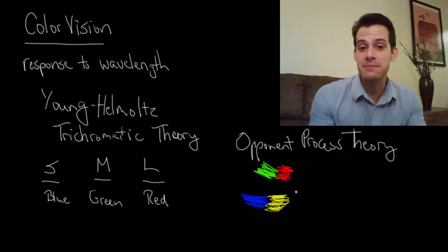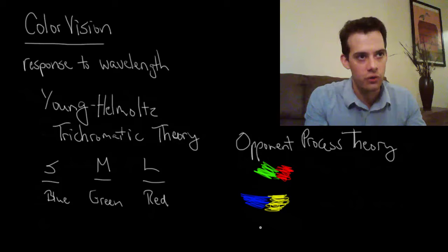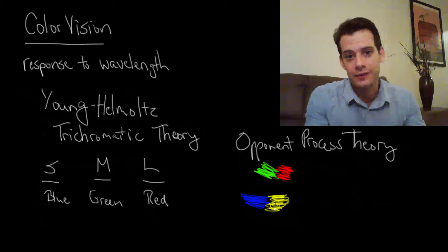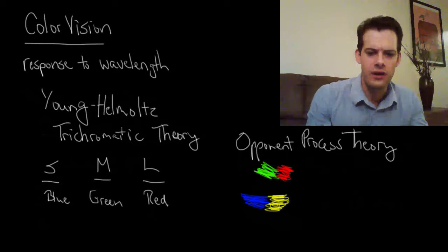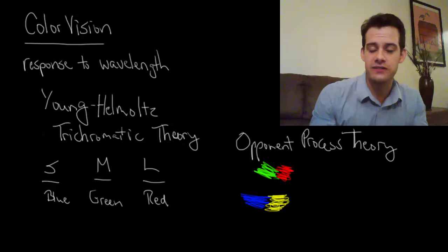But the same thing can happen when you stare at blue. The blue message sort of weakens. Blue, blue, blue, blue. And then yellow comes in. And suddenly you see yellow even though it's actually equal parts blue and yellow in the white background. So that explains this color after image that we saw.